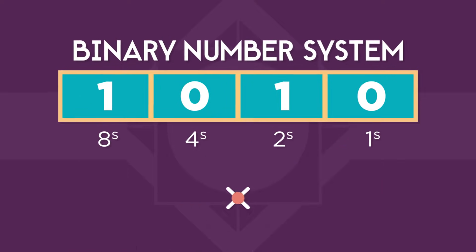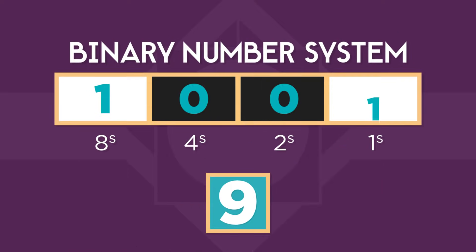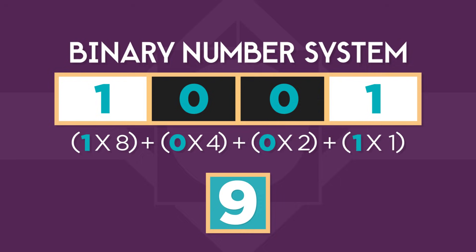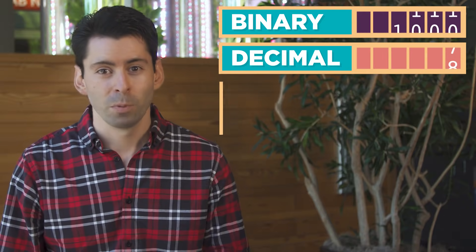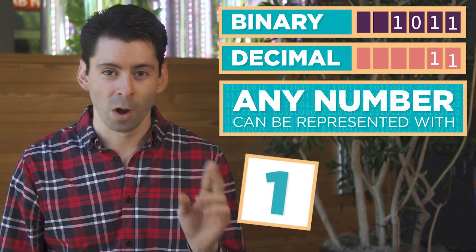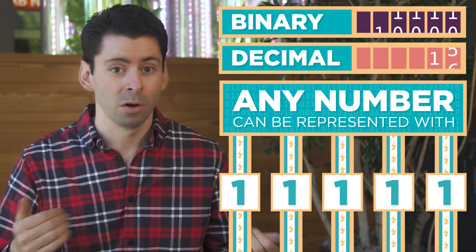For example, the number nine in binary is 1, 0, 0, 1. To calculate the value, we add one times eight, plus zero times four, plus zero times two, plus one times one. Almost nobody does this math because computers do it for us. What's important is that any number can be represented with only ones and zeros, or by a bunch of wires that are on or off.